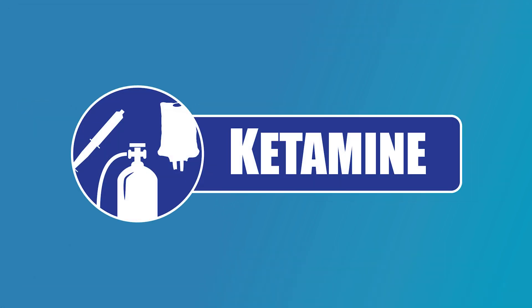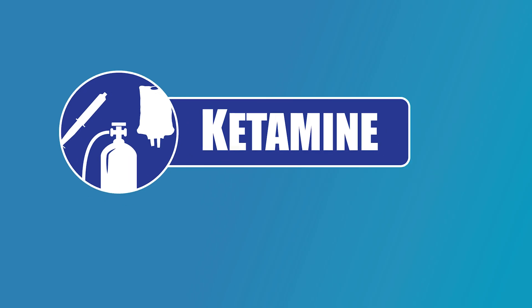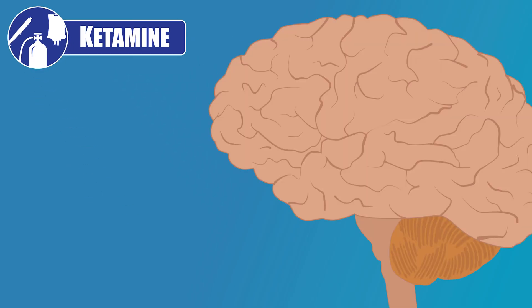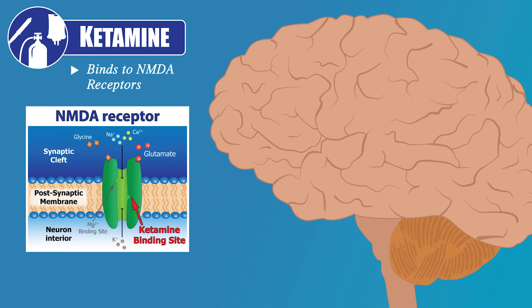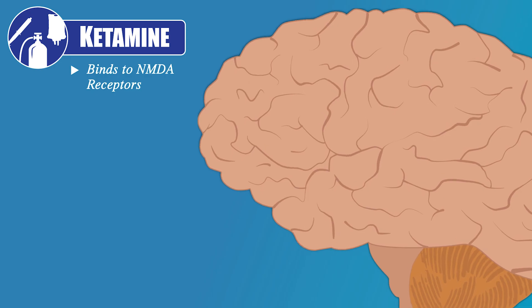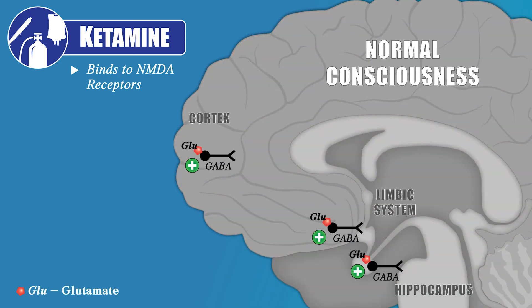Ketamine is an anesthetic adjunct and analgesic. It suppresses breathing much less than other anesthetics. Ketamine acts primarily by binding to NMDA receptors in the brain and spinal cord. NMDA receptors are a major postsynaptic ionotropic receptor for the excitatory neurotransmitter glutamate. GABAergic inhibitory interneurons within the cortex, limbic system, and hippocampus regions of the brain have these NMDA receptors.